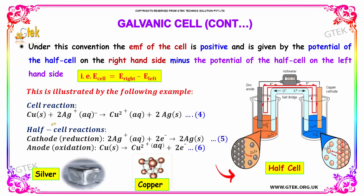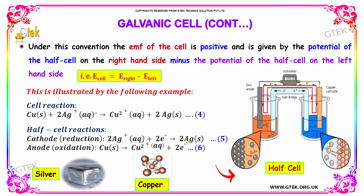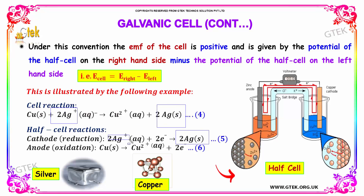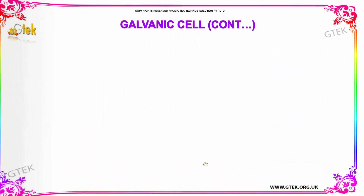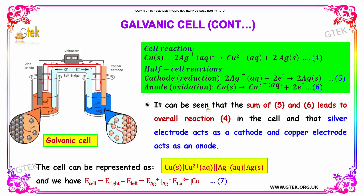This is illustrated by the example: Cu + 2Ag⁺ → Cu²⁺ + 2Ag. The cathode half-reaction (reduction) is Ag⁺ + e⁻ → Ag, and the anode half-reaction (oxidation) is Cu → Cu²⁺ + 2e⁻. The sum of these two half-reactions gives the overall cell reaction. The silver electrode acts as the cathode and the copper electrode acts as the anode. The cell EMF is given by E_cell = E°(Ag⁺/Ag) − E°(Cu²⁺/Cu).